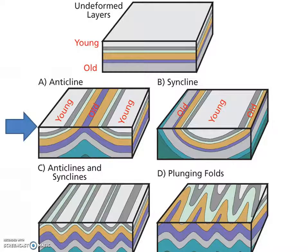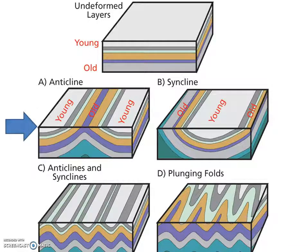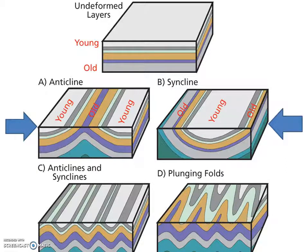We can also consider relative geologic age when looking at outcrops to determine whether they are anticlines or synclines. In an anticline, the younger rock layers are found on the limbs of the fold, while the older rock layers are found along the axis. In the case of a syncline, it's the opposite — the older rock layers are found on the limbs, while the younger rock layers outcrop along the axis.